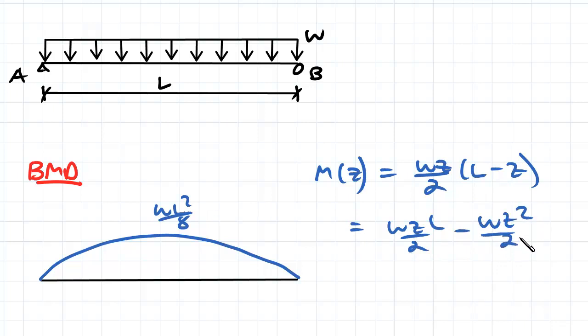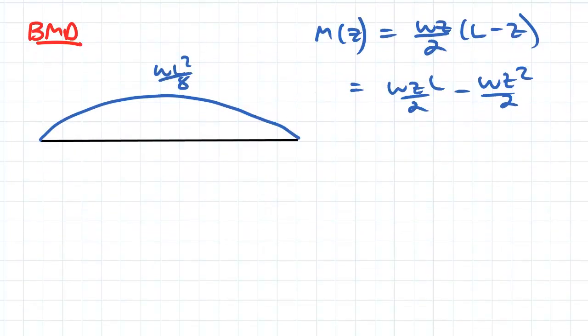So what we want to do is we want to use this to find an equation for our deflection. And so in the last video, what we did is we derived an equation that related the second derivative of deflection with our bending moment. So we're using the equation of our bending moment, which is in terms of Z, and then we're going to use that to get ourselves an equation for deflection.